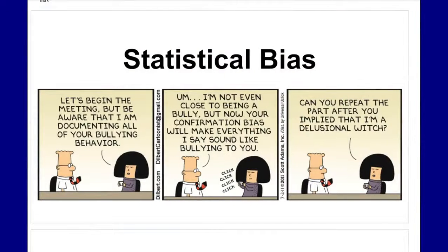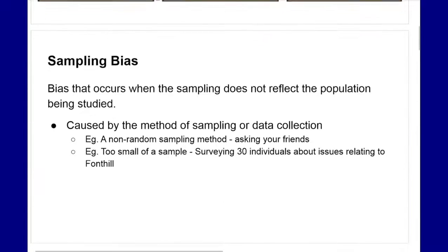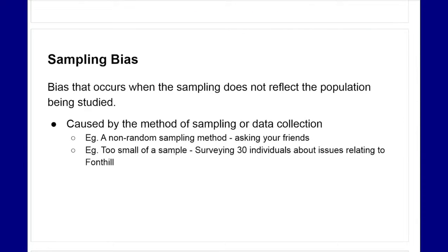In today's lesson we are going to be looking at statistical bias. We have mentioned bias previously when we looked at effective surveys in the previous lesson. We're going to look more at specific types of bias, how we might be able to recognize them, and what things we can do to change or reduce them. The first type of bias we are going to look at is sampling bias.